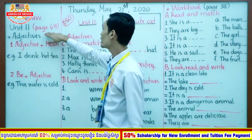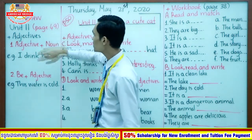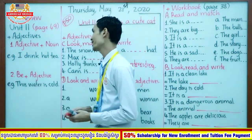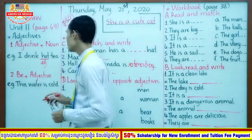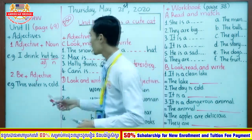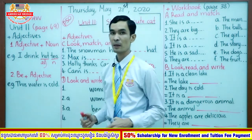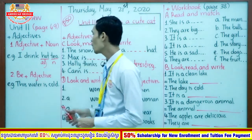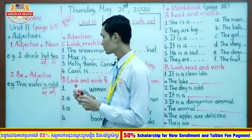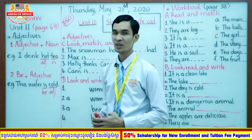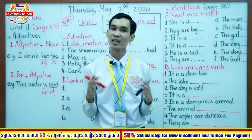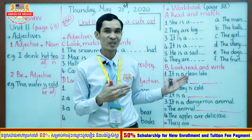In Unit 11, yesterday we finished page 49. In Unit 11, we focus on Attitudes, and we have two different forms. One: Attitude plus noun. Example: I drink hot tea. Hot is the attitude and tea is the noun — attitude plus noun. Two: To be plus adjective. Example: This water is cold. Cold is the attitude, so it's be plus attitude. So we have two different forms in attitude, and I hope you can remember them very well, because these two will help you in your daily writing, speaking, and to do these exercises.